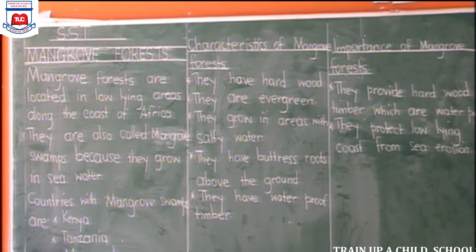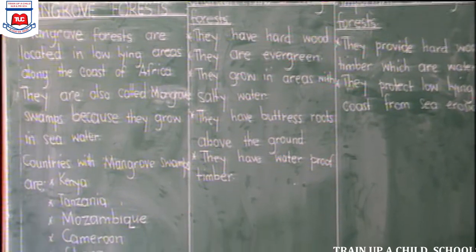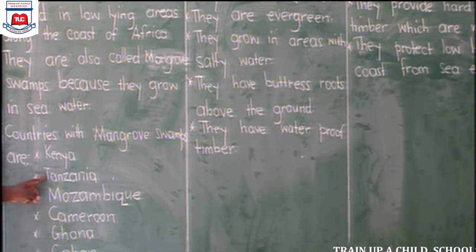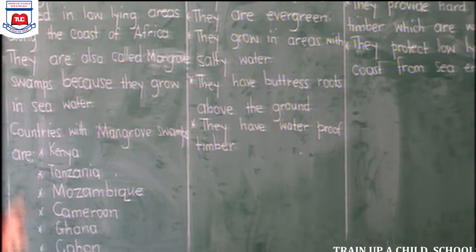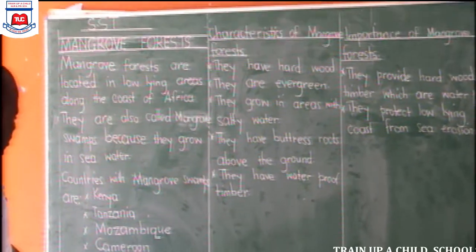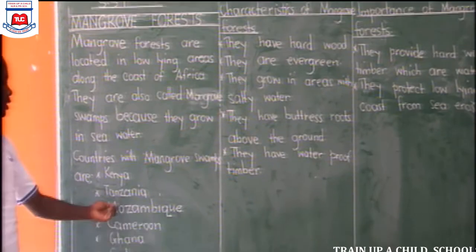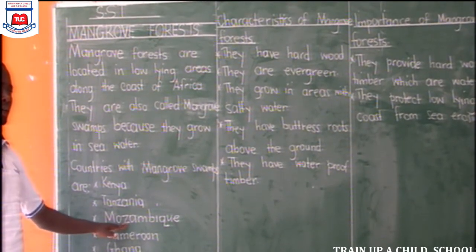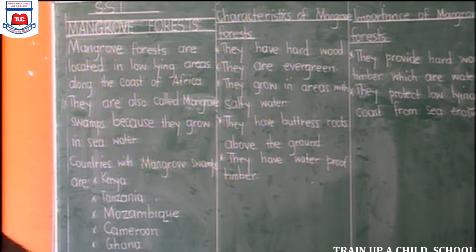Another country we have is Mozambique. Mozambique lies along the coast. It lies in the southern part of Tanzania and is separated by the river Mozambique from Tanzania. So this country Mozambique also has mangrove forests.